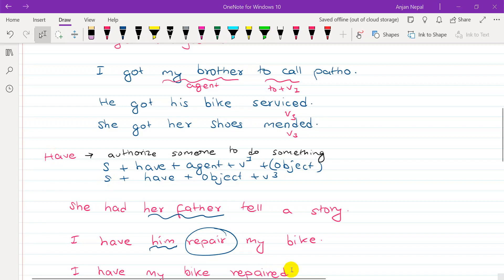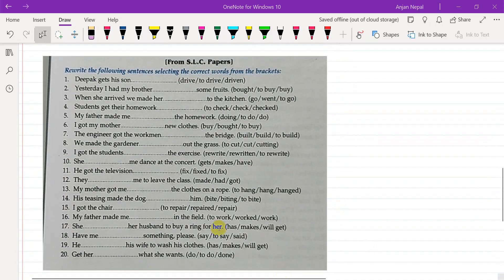Okay, I'll give you five minutes. You go through the practice. What's your name? Aabid. What's your name? Asleemah. Okay, number one. He gets his son to drive. Yesterday I had my brother to buy some fruits.